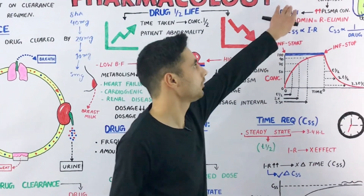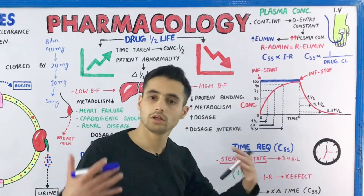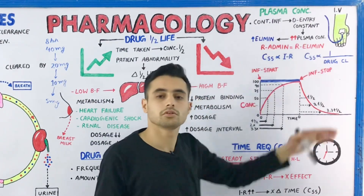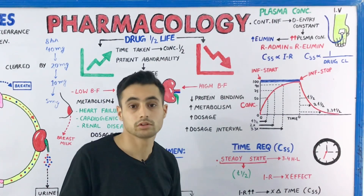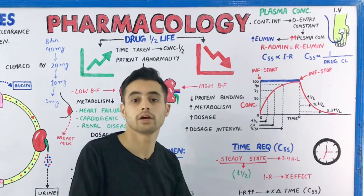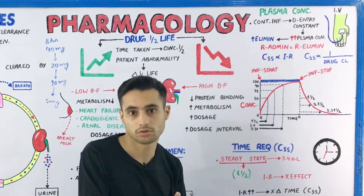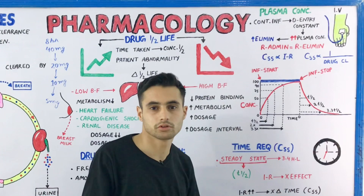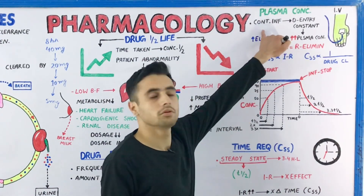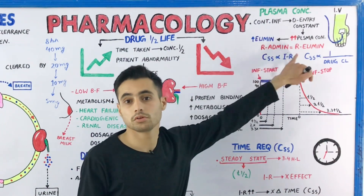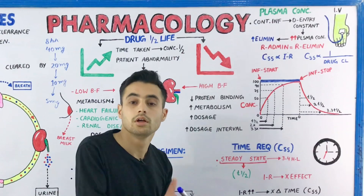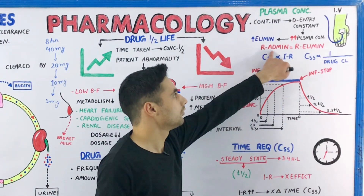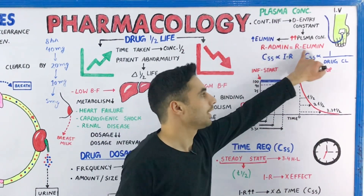When you infuse the drug continuously, the rate of drug entry is constant, so plasma concentration increases gradually. At the same time, elimination begins because the drug is delivered to the bloodstream, which takes it to the kidneys for clearance. So as soon as the drug is injected, it is also being eliminated — the rate of administration increases and the rate of elimination also increases, until the steady state is achieved when they are equal.